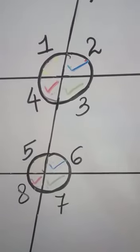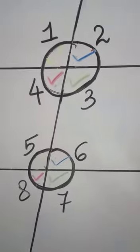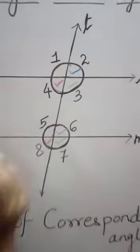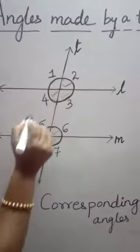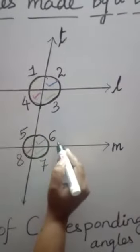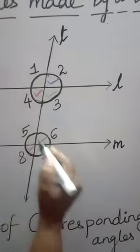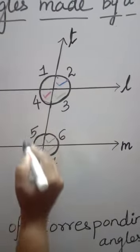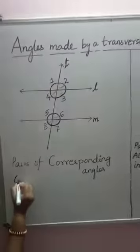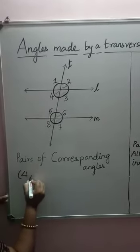The 4 pairs of corresponding angles are: angle 1 and angle 5, angle 2 and angle 6, angle 3 and angle 7, and angle 4 and angle 8. So, we see that there are 4 pairs of corresponding angles.